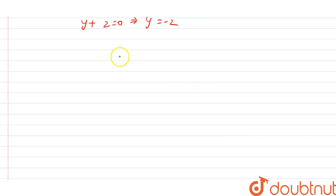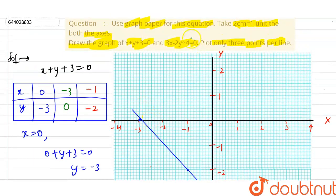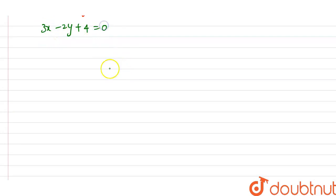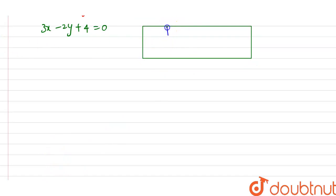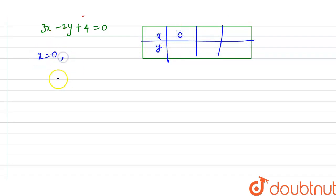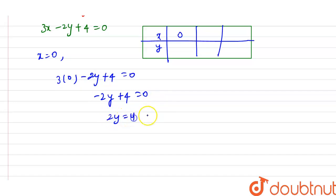Now in a similar manner I'm going to work on the second equation: 3x - 2y + 4 = 0. I'll make a table for x and y values. Putting x = 0: 3(0) - 2y + 4 = 0, giving -2y + 4 = 0, so 2y = 4 and y = 2.